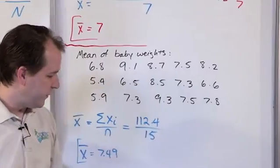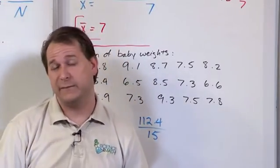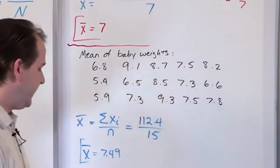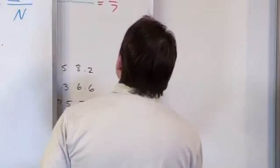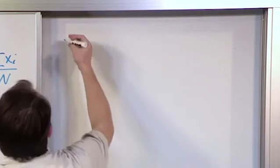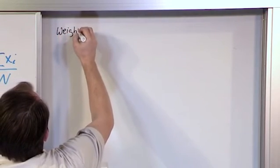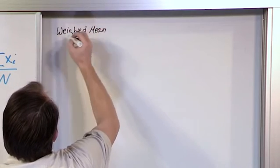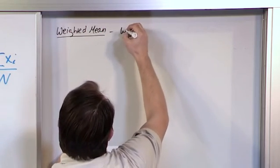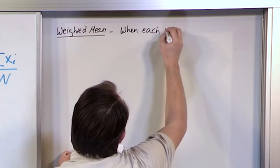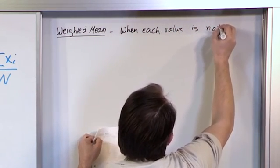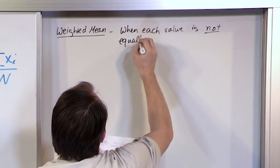Now one more thing I do want to show you before we close is something that you may or may not have seen before, and that's called a weighted mean. A weighted mean is something you can see occasionally, especially when you calculate grades and things like that. So a weighted mean — let's write it down. It is a mean, but it is when each value of your data set is not equally important.